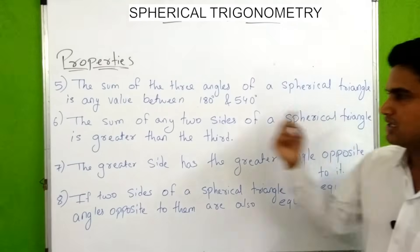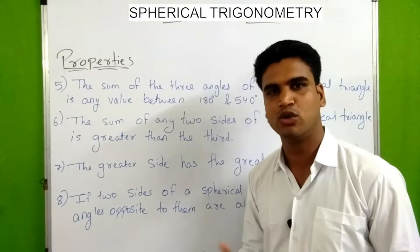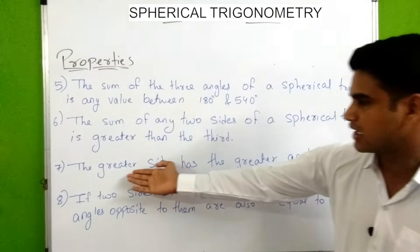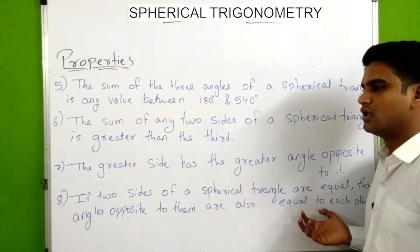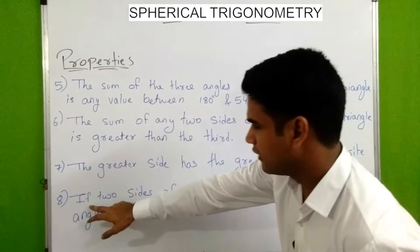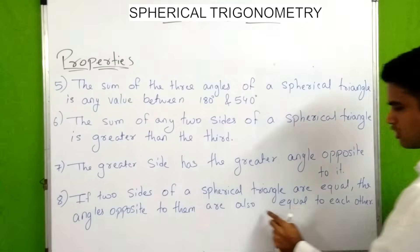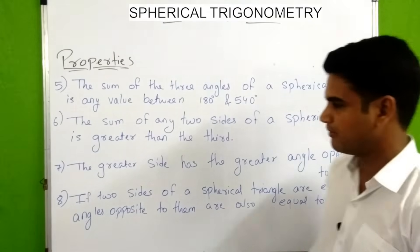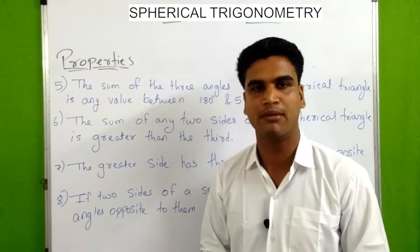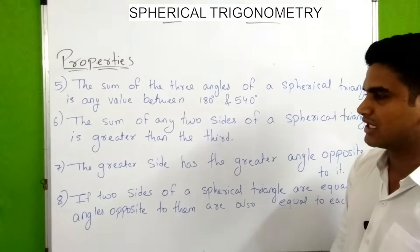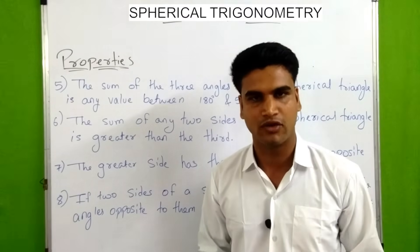Further properties: the greater side has the greater angle opposite to it, which is the same as in a plane triangle. If two sides of a spherical triangle are equal, the angles opposite to them are also equal to each other — this is also the same as the isosceles triangle property in plane triangles.